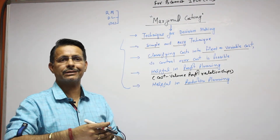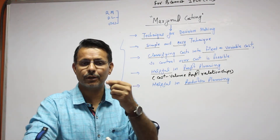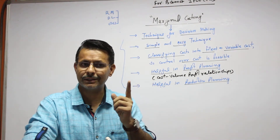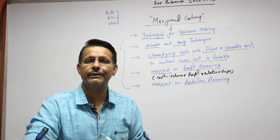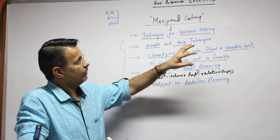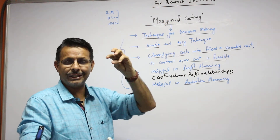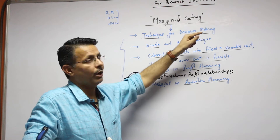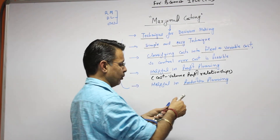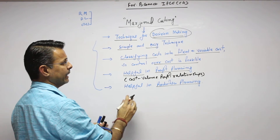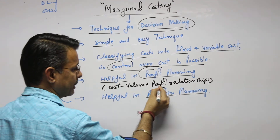We had already discussed the methods of costing. Cost management is divided into three parts: one is elements of costing, second is methods of costing, and third is techniques of cost management. With this topic, we are going to start decision-making techniques, and out of these techniques, marginal costing is the most important. This technique helps in decision-making, control over cost, profit planning in advance, and production planning.